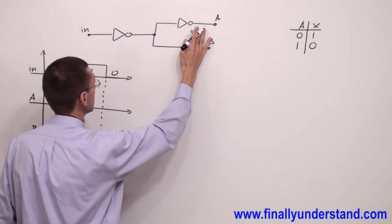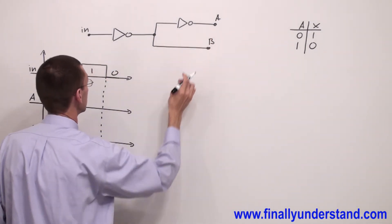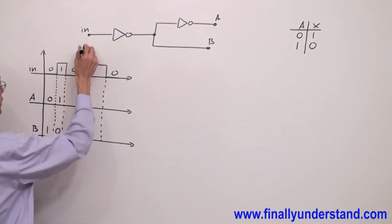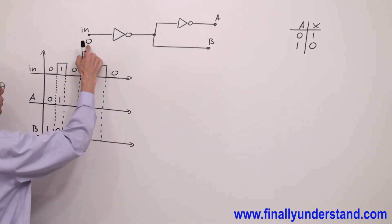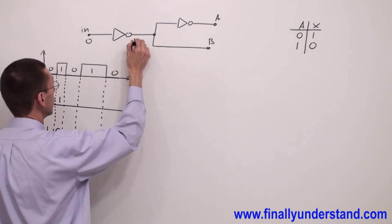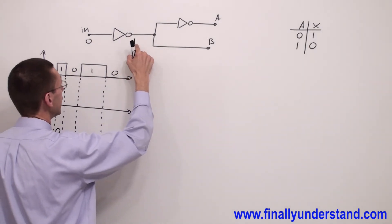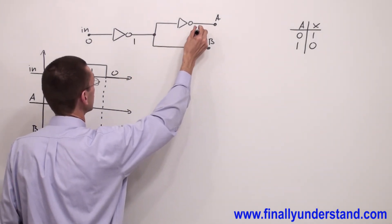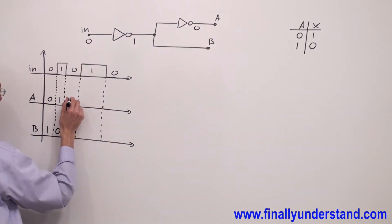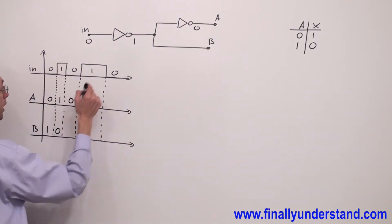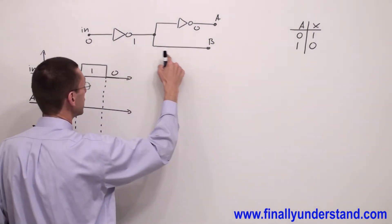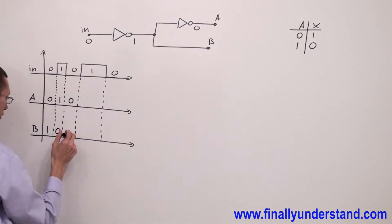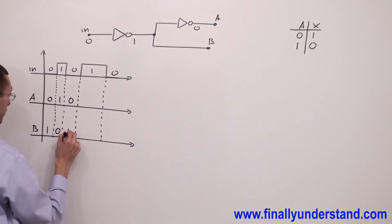Let me erase these logic levels and again apply zero to the input. Zero is going to be inverted — I get one. This one will be inverted to zero. So A is going to be zero, and this one will go directly to B. That's why I'm going to have one at B.